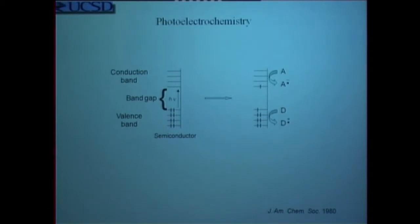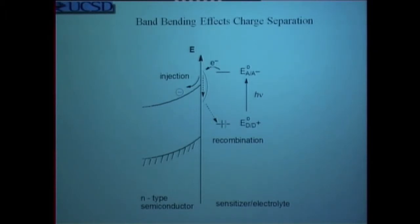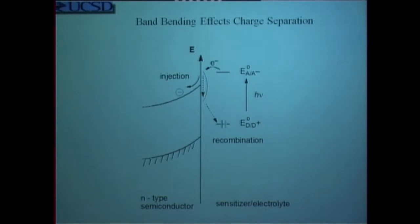One thing that helps get reactivity on a titanium dioxide surface is band bending. When an electron is ejected into the titanium dioxide it moves away from the surface, and as a result anything adsorbed on that solid surface has a chance to undergo reactivity rather than simply recombining with the higher-lying energetic orbital. That recombination wastes energy and is one reason why the efficiency of this indirect water splitting is not as efficient as a process which would use photons directly.